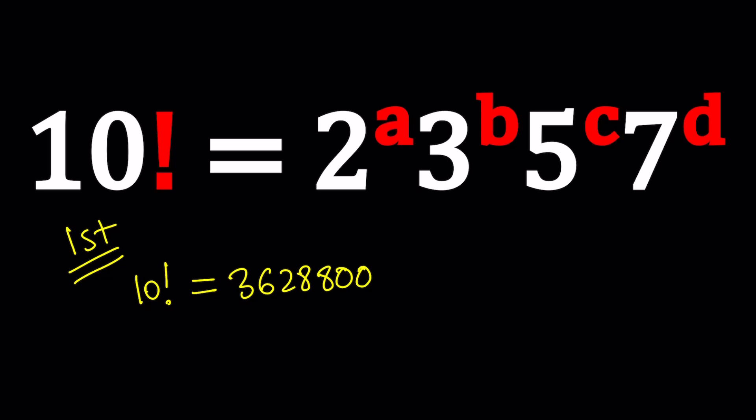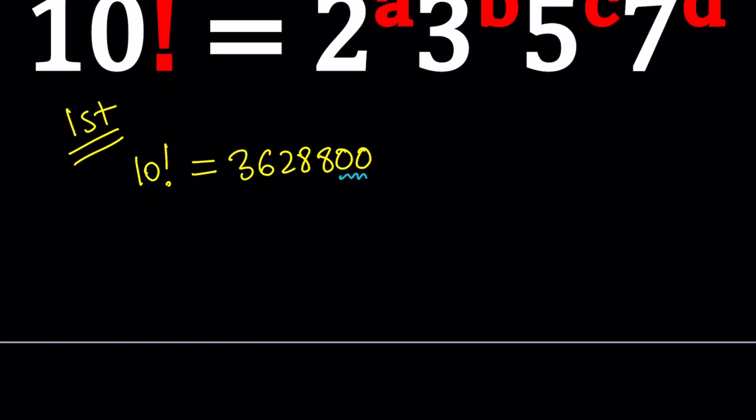And we're going to use this number to find the prime factorization. One of the things you should immediately notice is that it ends in two zeros. Obviously, factorials end in zeros, and the number of zeros increase as you deal with higher and higher factorials. So let's go ahead and write this as 36,288 multiplied by 100. We're going to do the prime factorization, so it would help to break this number down as much as possible.